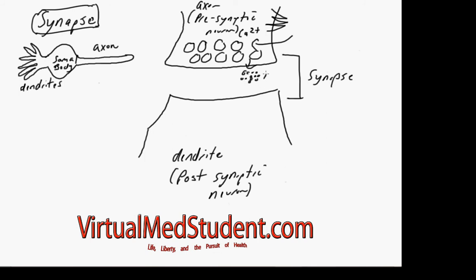That neurotransmitter diffuses across to the dendrite or the cell body of the postsynaptic neuron and interacts with receptors. This will open up ion channels and allow ions such as sodium, potassium, chloride to rush into or out of the cell.